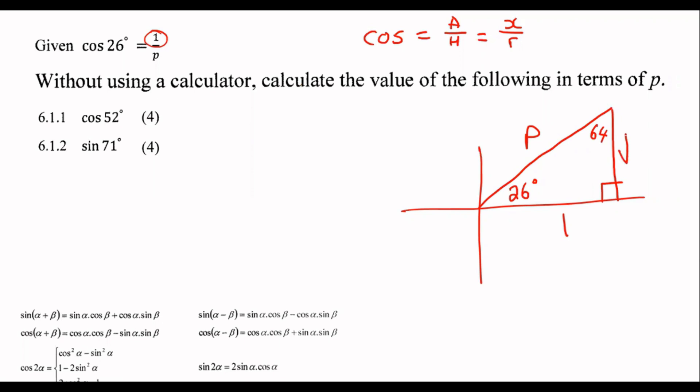And then to find this side, we just use Pythagoras. But that would give us p squared minus one. So at least now we have our triangle complete.